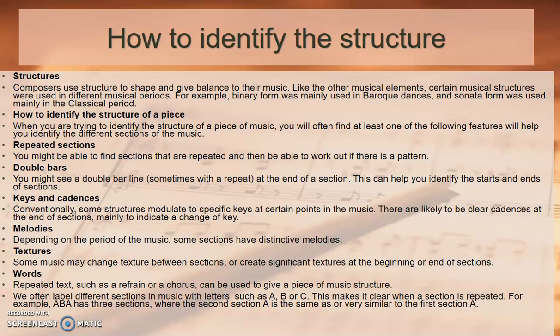When you are trying to identify the structure of a piece, you will often find at least one of the following features will help you identify the different sections of the music. Repeated sections: you might be able to find sections that are repeated and work out if there is a pattern. Double bars: you might see a double bar line, sometimes with a repeat, at the end of a section, which can help you identify the starts and ends of sections.